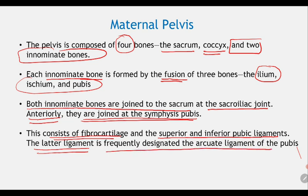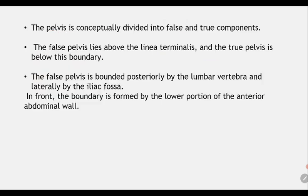The lateral ligament is frequently designated the arcuate ligament of the pubis. The pelvis is conceptually divided into the false pelvis and the true pelvis. The false pelvis lies above the linea terminalis and the true pelvis is below that boundary.